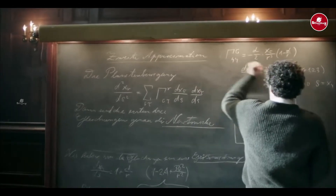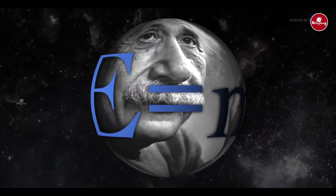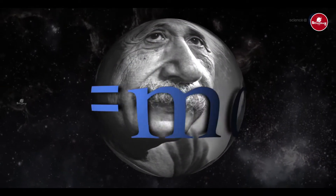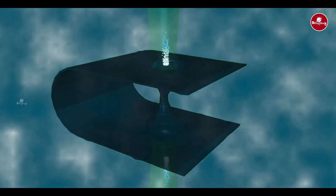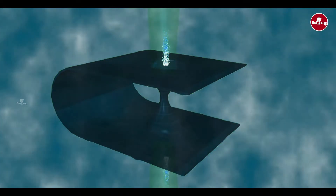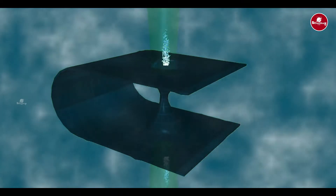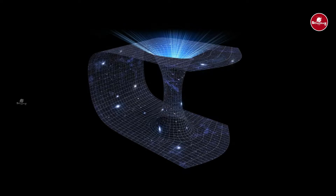In 1935, Albert Einstein and Nathan Rosen used the Einstein field equations to show that one point in space could be connected to another point in space. This is called the Einstein-Rosen Bridge, which is essentially a wormhole.